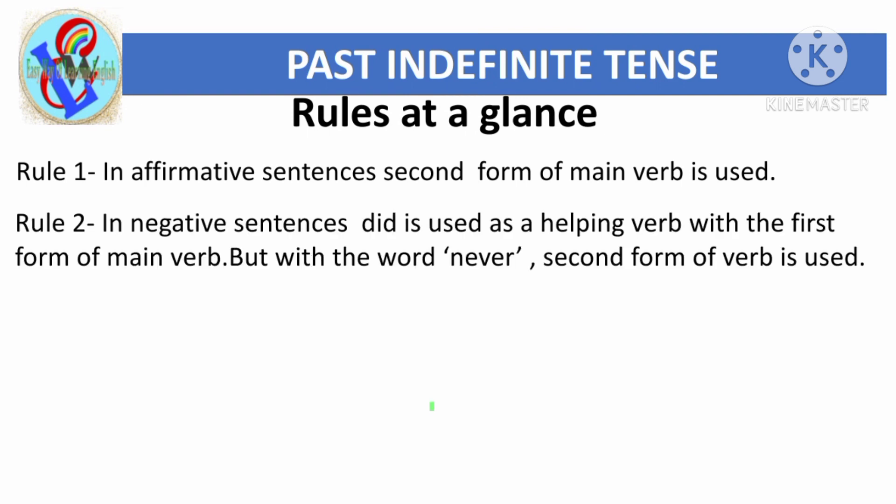Rule 2: In negative sentences, 'did' is used as a helping verb with the first form of the main verb. But with the word 'never', the second form of the verb is used.